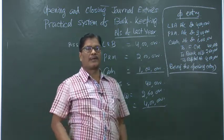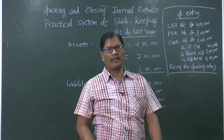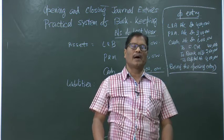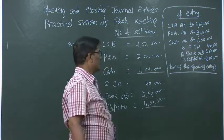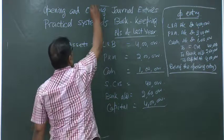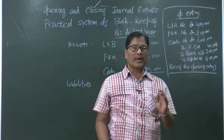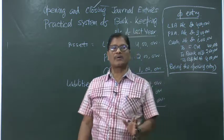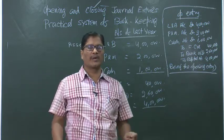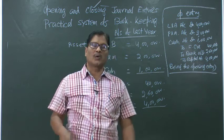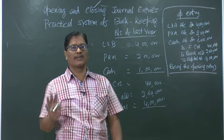In the opening entry, we have to remember just one thing: all the assets will be debited individually and all the liabilities individually will be credited, and the capital will also be credited. Coming to the closing entry, we have to be conscious about one thing — all asset accounts are to be closed. Since asset accounts show debit balances, while closing them we will have to credit them, so the account will be closed, being the closing entry.